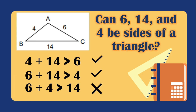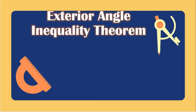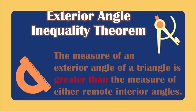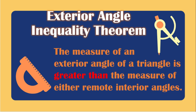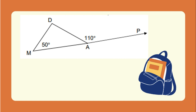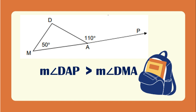Let's have the Exterior Angle Inequality Theorem. The measure of an exterior angle of a triangle is greater than the measure of either of the remote interior angles. Using this figure, we will find out which angles are less than the measurement of angle DAP, which is the exterior angle. The measure of angle DAP is greater than the measure of angle DMA, because angle DMA is only 50 degrees.